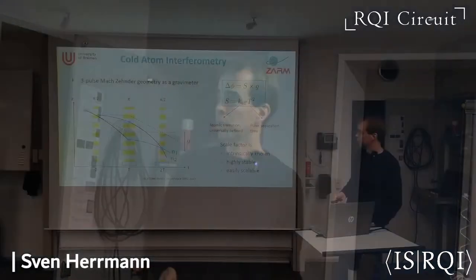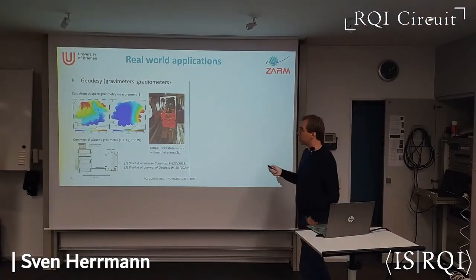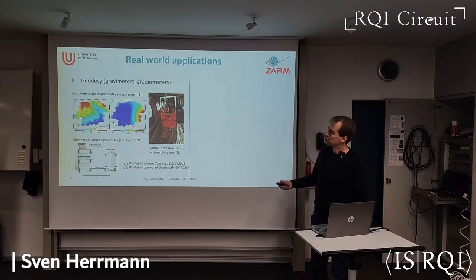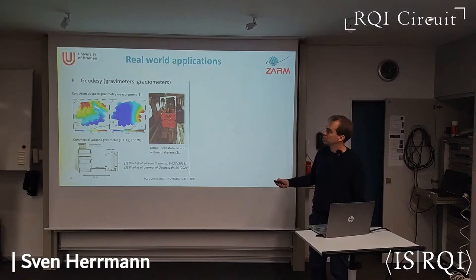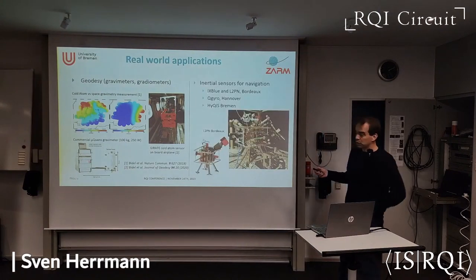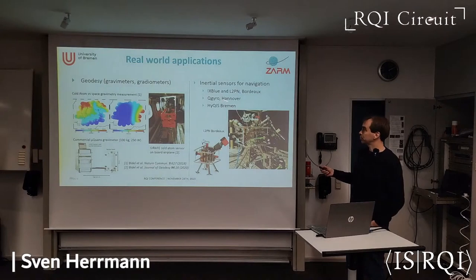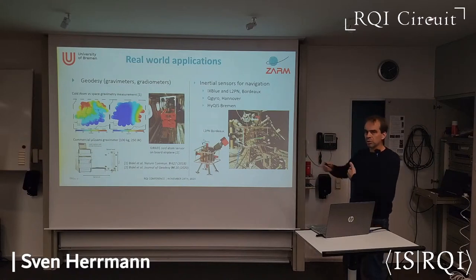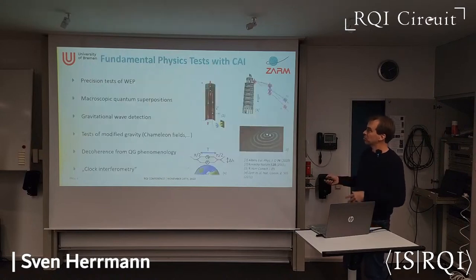This has many real-world applications. For example, people have used atom interferometers on board a plane — a gravimeter was flown over Iceland by a French group from Onera to do gravimetry above a glacier, and there are commercial devices. A drift-free accelerometer is very interesting for inertial navigation — for long-term navigation without drift, you can navigate more accurately than with a classical drifting sensor.